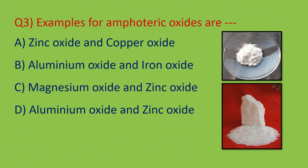Question number three: examples of amphoteric oxides. Amphoteric oxides are metal oxides that can react with both acids and bases to produce salt and water. The important amphoteric oxides are aluminum oxide and zinc oxide. So option D is the right answer.